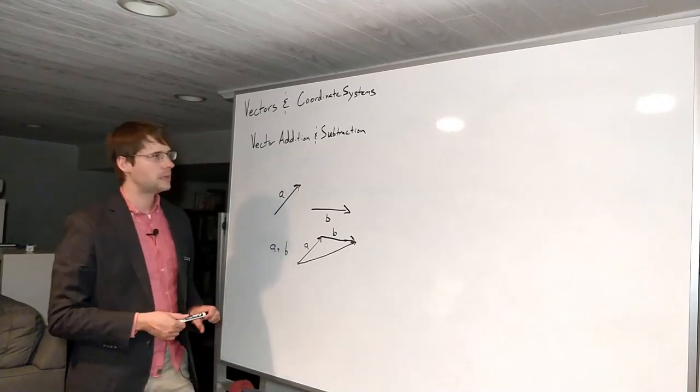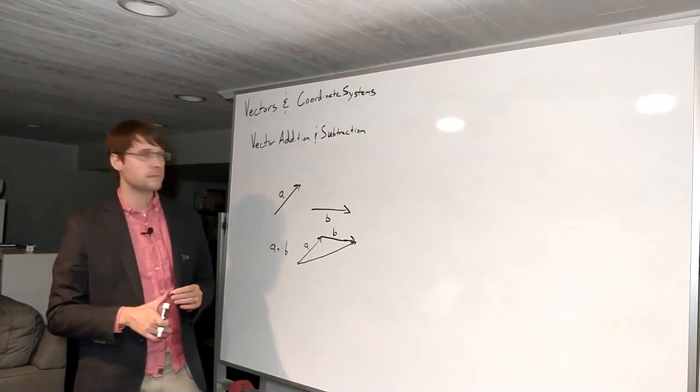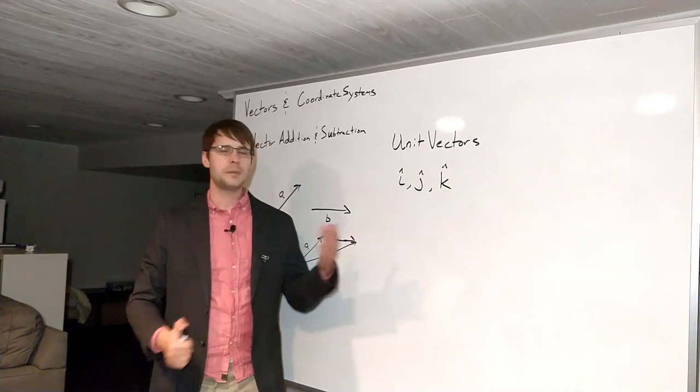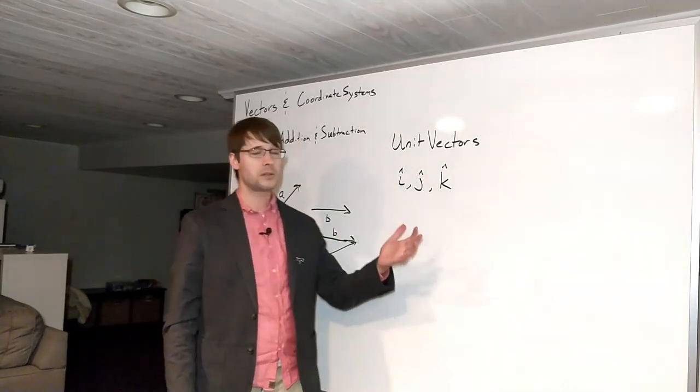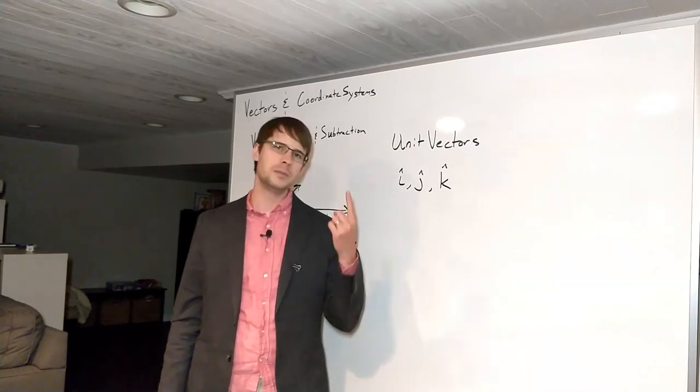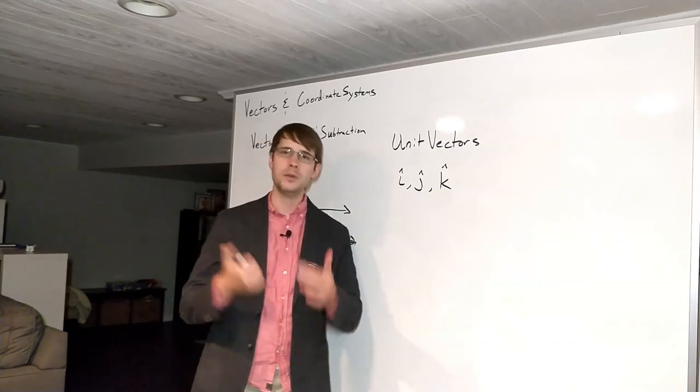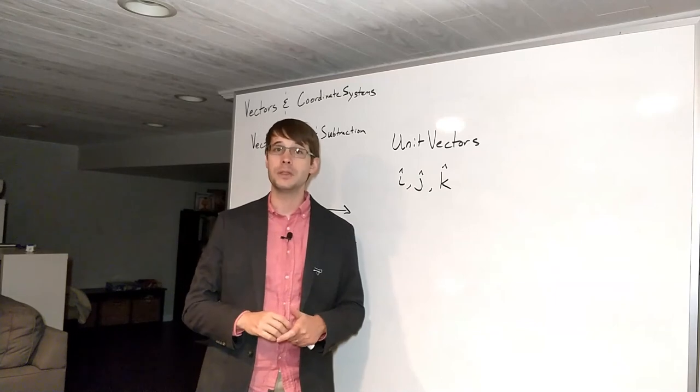The last thing I wanted to talk about is unit vectors and IJK notation. So we typically say that vectors have a magnitude and a direction. Unit vectors kind of only have a direction. I mean they do have a magnitude but that magnitude is exactly equal to 1. So if you multiply a scalar by a unit vector it keeps the same magnitude but now it points in the direction of this unit vector.